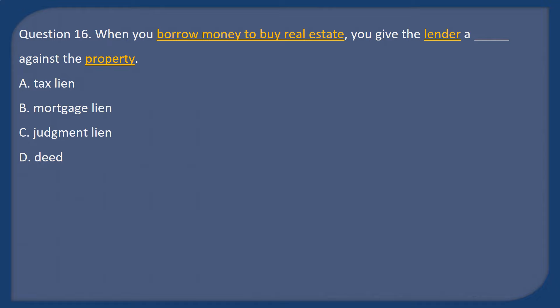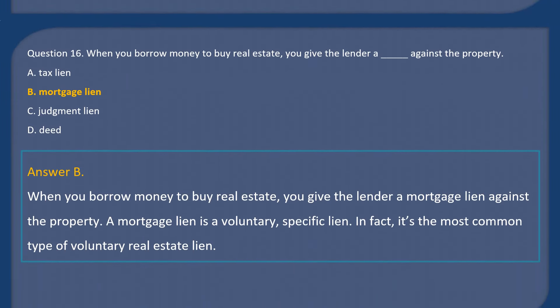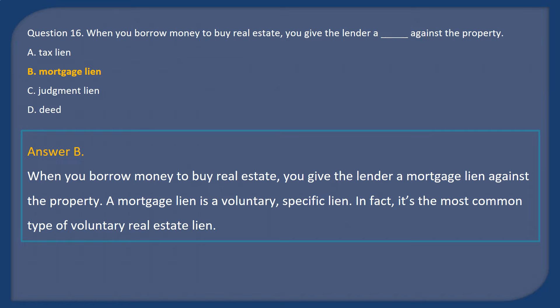Question 16: When you borrow money to buy real estate, you give the lender a __ against the property. A. Tax lien. B. Mortgage lien. C. Judgment lien. D. Deed. Answer: B. When you borrow money to buy real estate, you give the lender a mortgage lien against the property. A mortgage lien is a voluntary specific lien — in fact, it's the most common type of voluntary real estate lien.